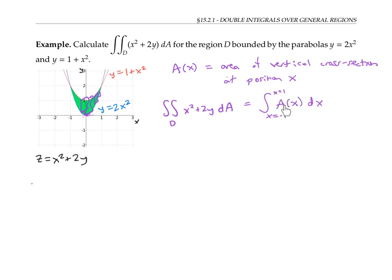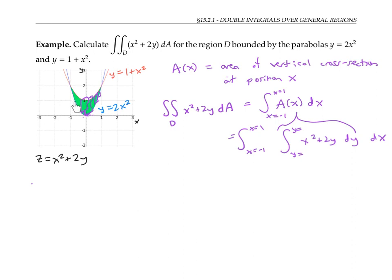The cross sectional area itself can be thought of as an integral — it's the integral of the function, integrated in the y direction, from the minimum y value to the maximum y value. The y values that are the bounds of integration vary depending on x, so I can't write them as numbers; I have to write them as functions of x. The lower bound is the y value on the blue curve, so that's two x squared, and the upper bound is the y value on the red curve, so that's one plus x squared.